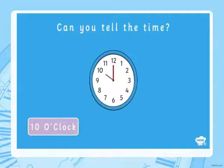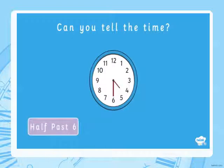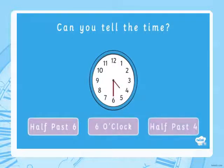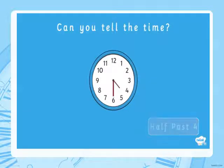The big hand is pointing at 12, so we say o'clock and put it after the number that the small hand is pointing to, which is 10. That means it's 10 o'clock. What is the time now? Is it half past 6, 6 o'clock, or is it half past 4? It's not 6 o'clock because the minute hand isn't pointing to 12. It's not half past 6 as both hands would be pointing at 6. It's half past 4. Well done!